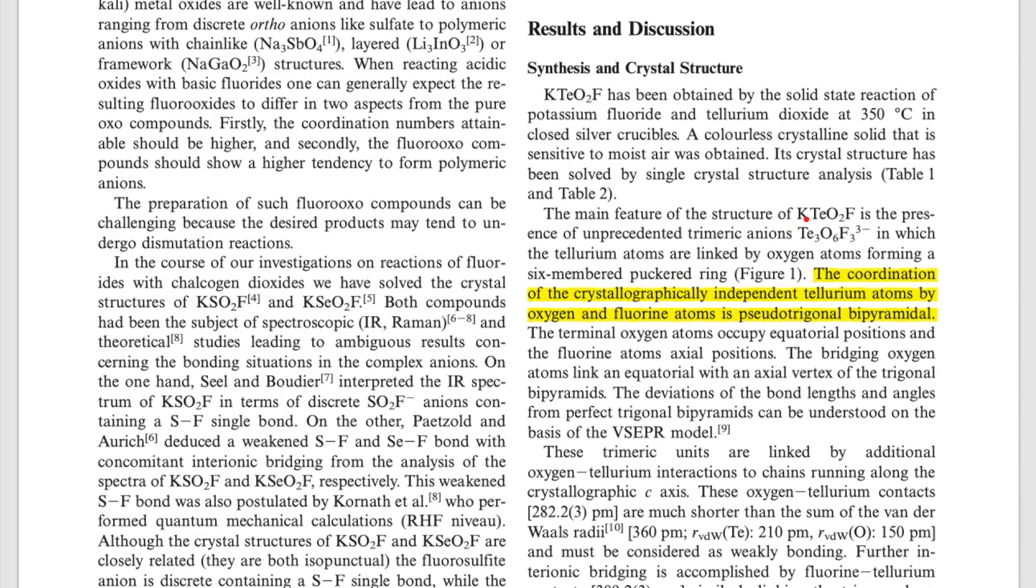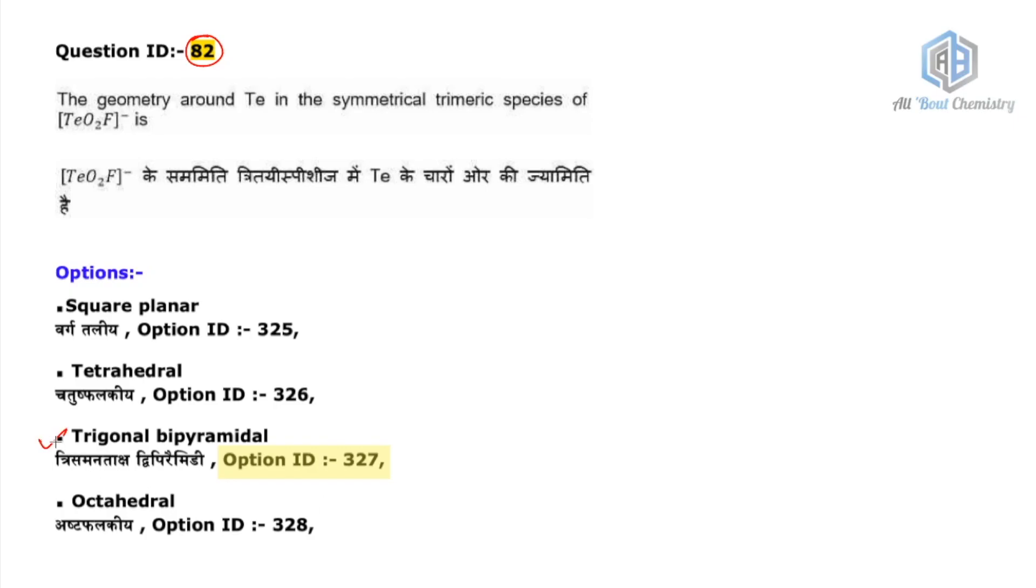Basically this TeO₂F⁻ is with potassium so that charge is getting neutralized. Here if you come in the results and discussion, they have said that the coordination of the crystallographically independent tellurium atoms by oxygen and fluorine atom is pseudo trigonal bipyramidal. You can read about all the things in the synthesis and crystal structure. They have mentioned everything like how they have actually got through this particular crystal, how this is formed. The main feature of the crystal structure of K(TeO₂F) is the presence of unprecedented trimeric anions, that is Te₃O₆F₃³⁻, in which the tellurium atoms are linked by oxygen atoms forming a six-membered puckered ring. The coordination of the crystallographically independent tellurium atom by the oxygen and fluorine atoms is pseudo trigonal bipyramidal.